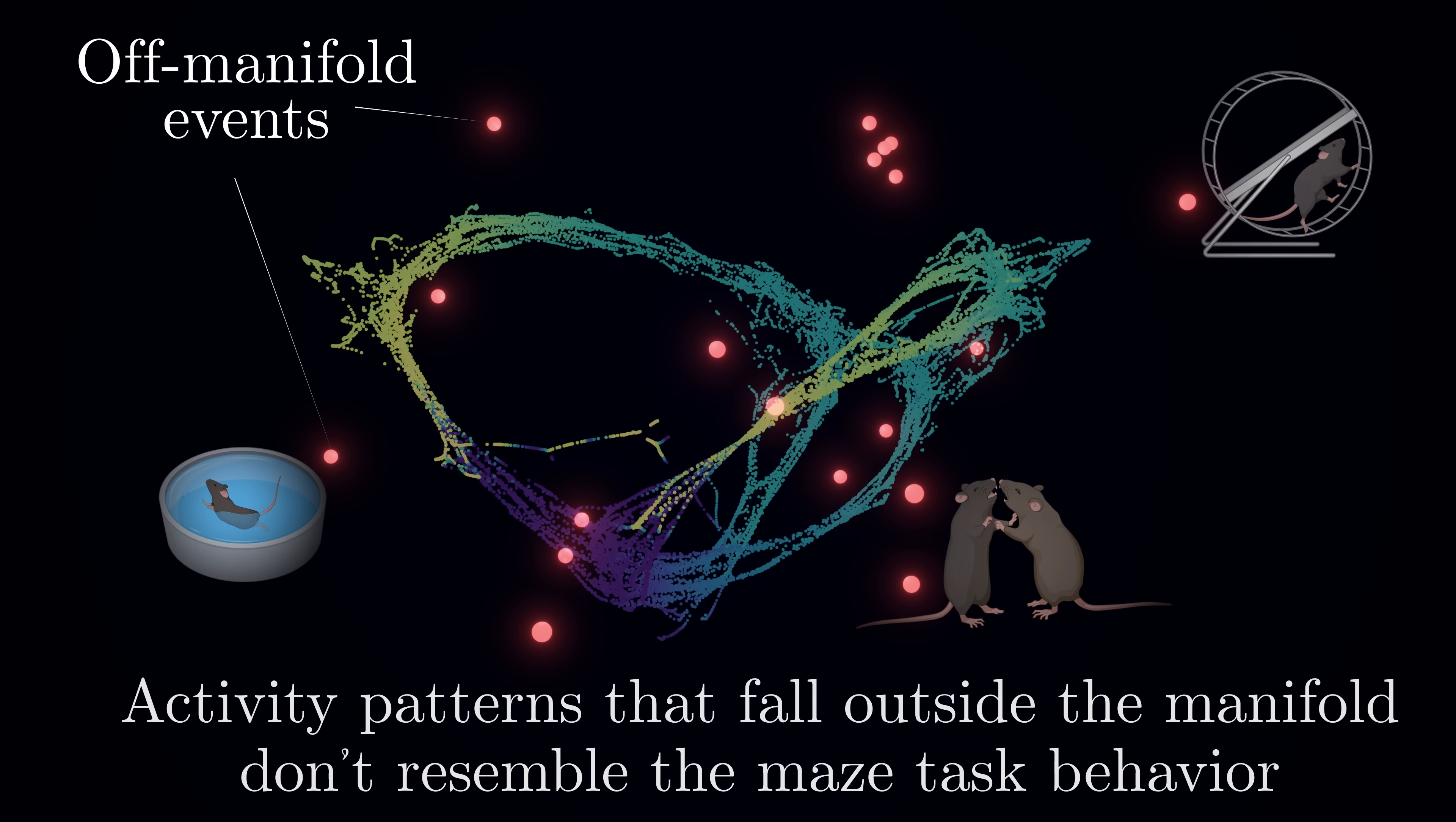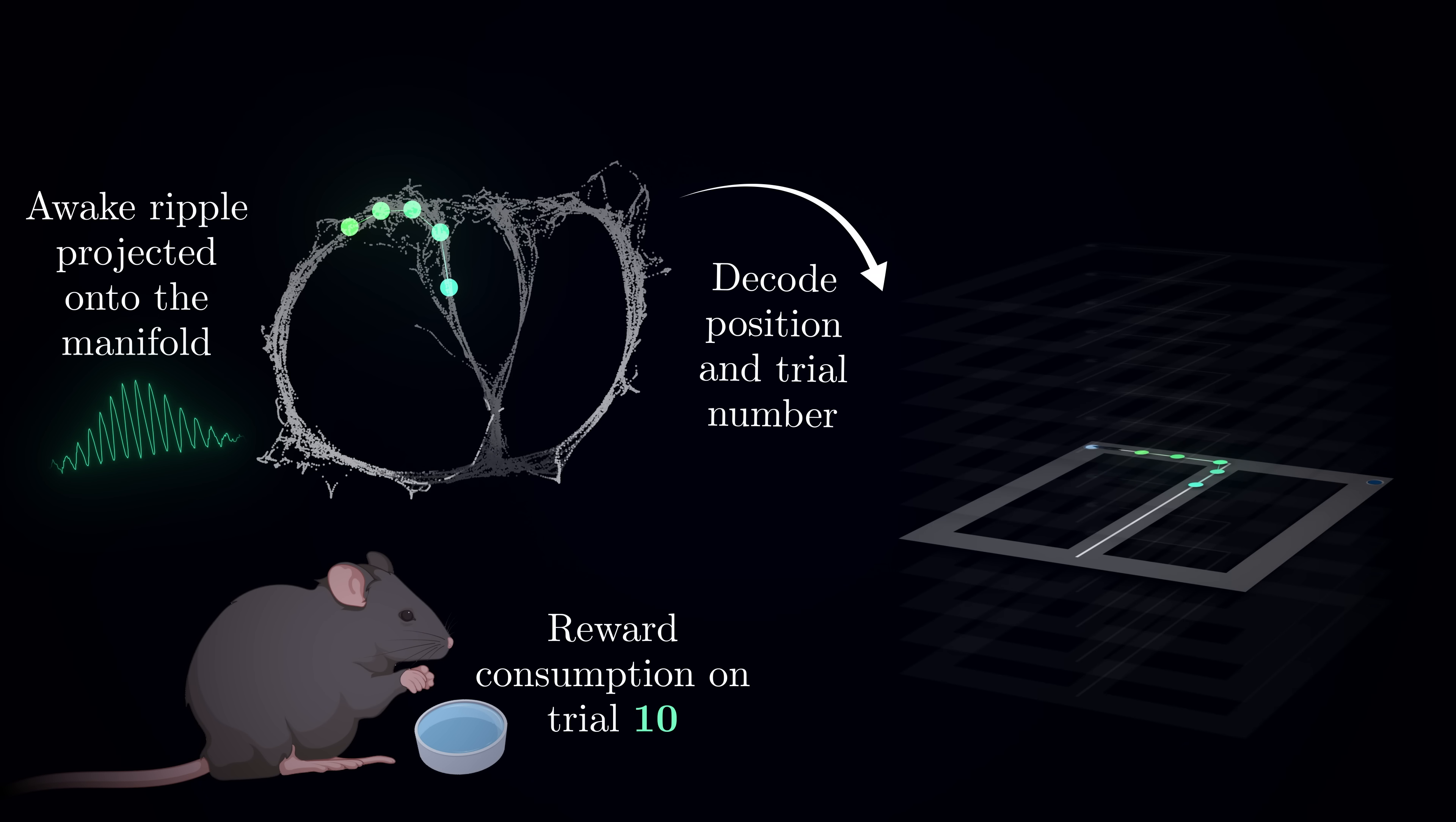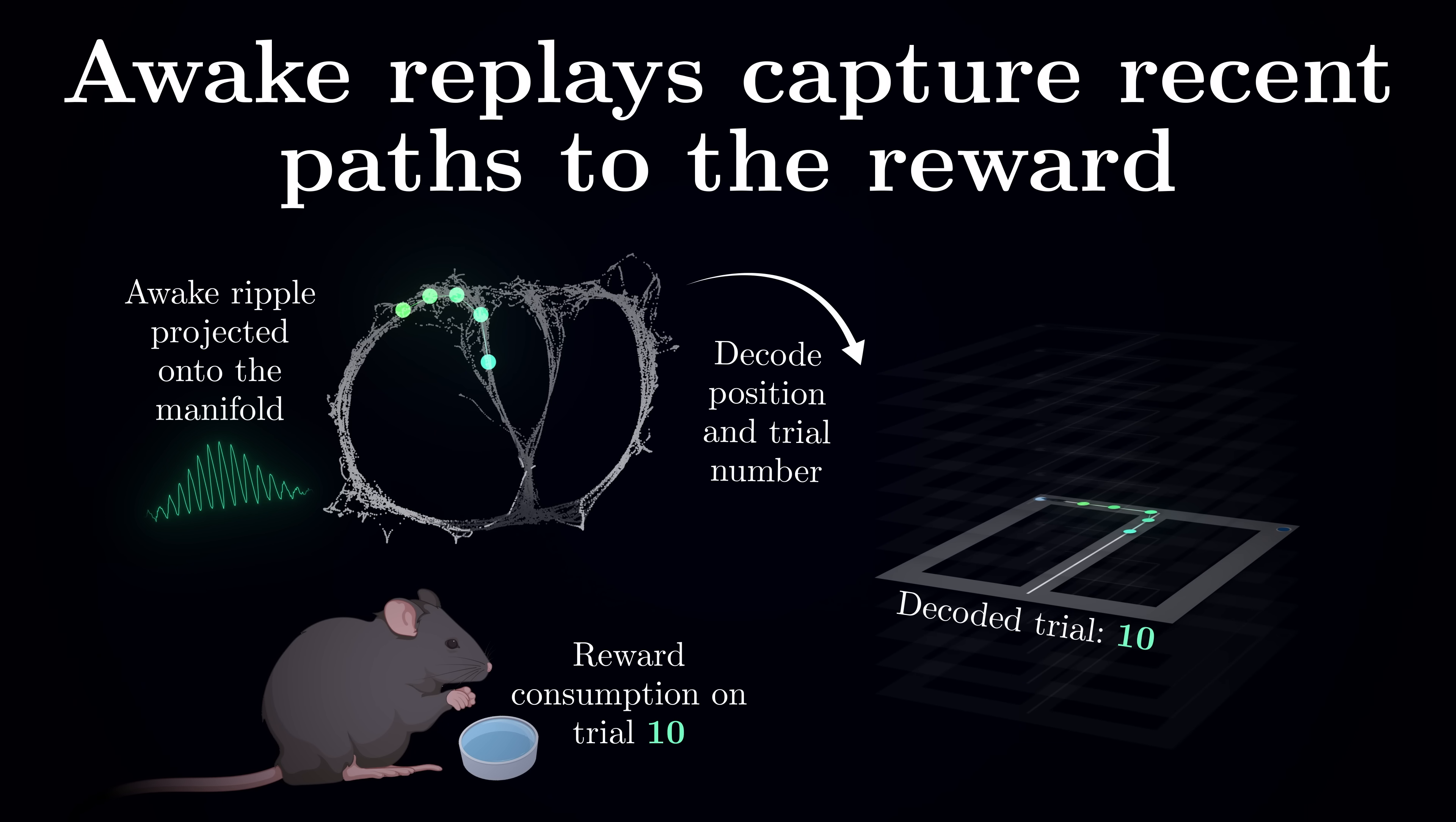Many of the ripples, however, do nicely fall onto our maze manifold, and they reveal something fascinating. These events correspond to temporally compressed replays of the maze trajectory that just led to the reward. Because we can decode the trial number, we can confirm that these replays specifically match the current trial the animal had just completed. In other words, awake replays capture recent memories of successful paths to the reward.